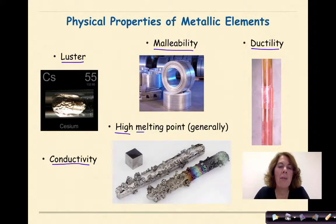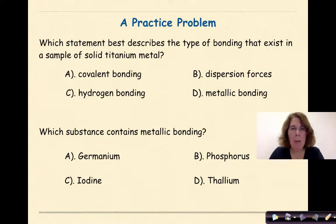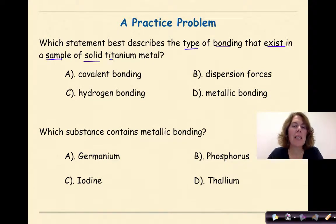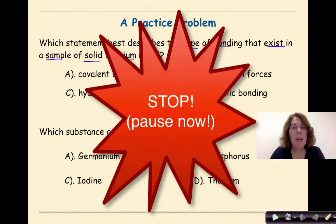So let's look at two practice problems. Which statement best describes the type of bonding that exists in a sample of solid titanium metal? Our choices are A, covalent bonding; B, dispersion forces; C, hydrogen bonding; D, metallic bonding. So what I'd like you to do is stop, make a selection, come back, and see how you did.